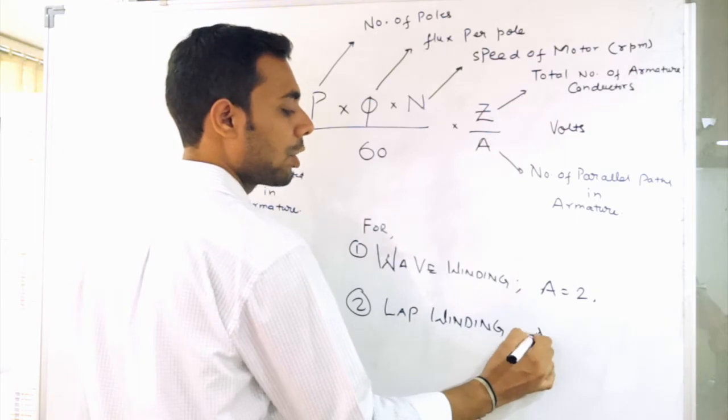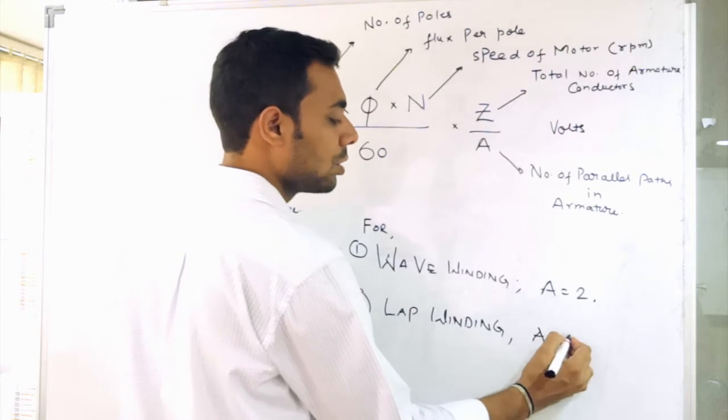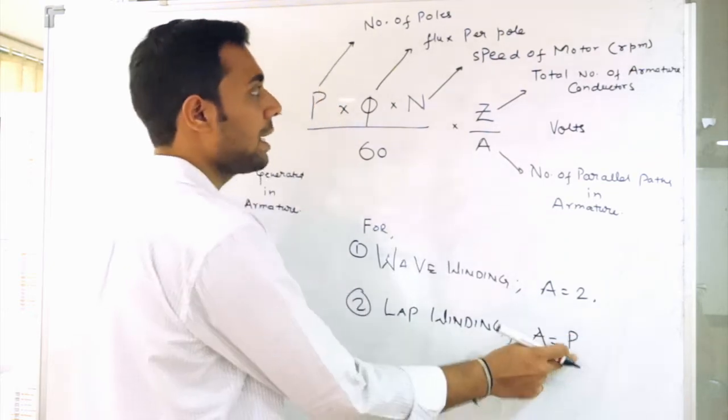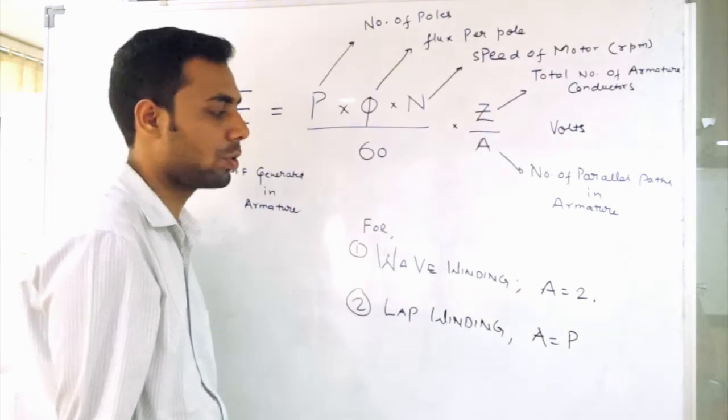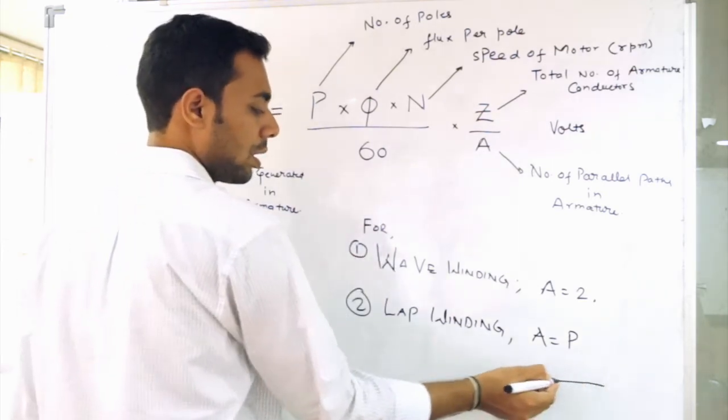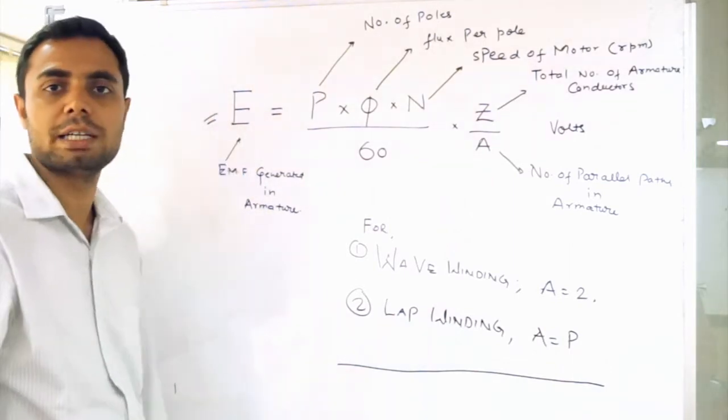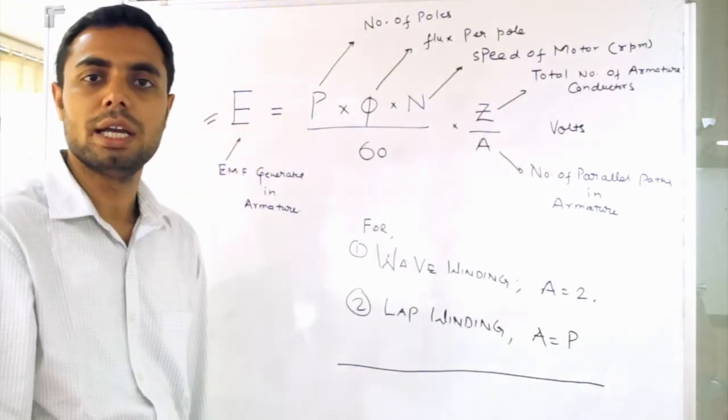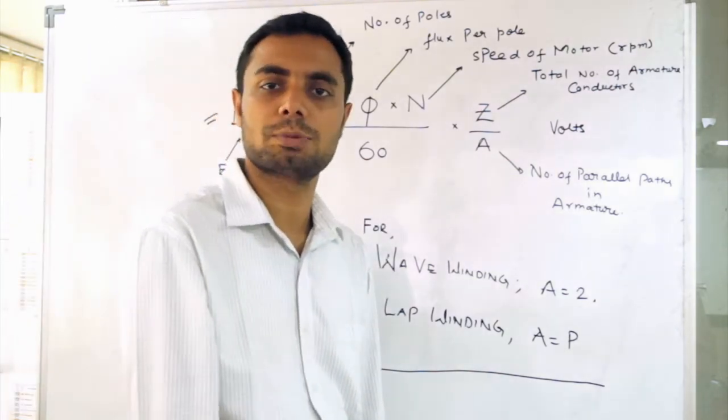Where number of parallel paths in the armature is equal to P. What is P? P is the number of poles in the DC motor. Using this information let's calculate what is the EMF generated in the DC motor as explained in the question.